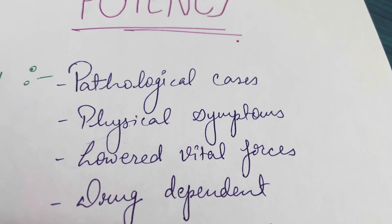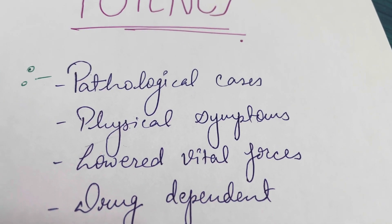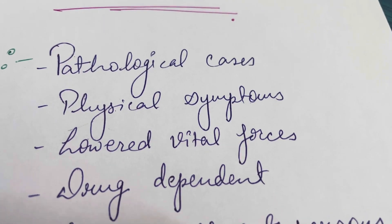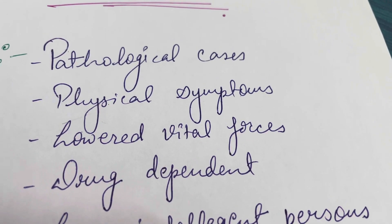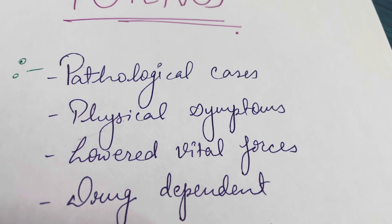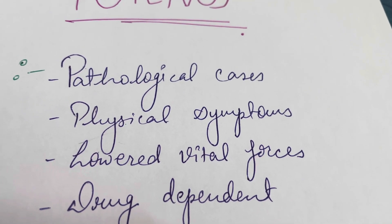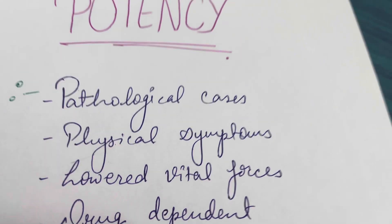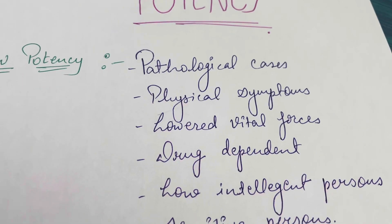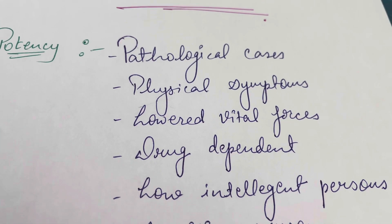Lowered vital forces — in the deadliest diseases like cancer, AIDS, tuberculosis, chemotherapy, CKD, chronic renal failure, right heart failure, left heart failure, brain stroke, and paralysis attack, vital energy is hampered for patients. That means there is no immunity. In these types of vitally hampered cases, we will mostly give low potency.